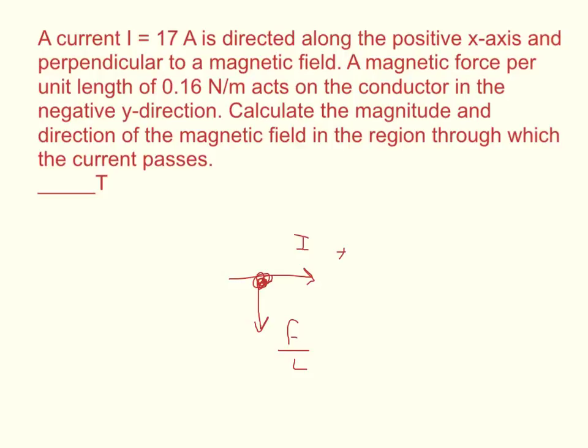Now the force on a length of wire is equal to the current times the magnetic field times the length times the sine of theta. In this case, it says that it's perpendicular. So sine of theta would be the sine of 90 degrees and it equals 1. So it cancels itself out.